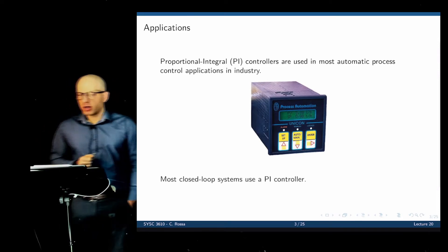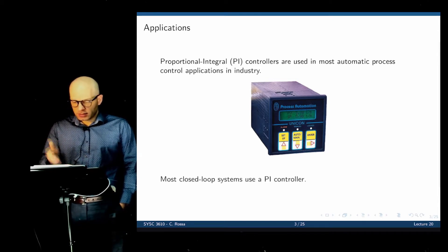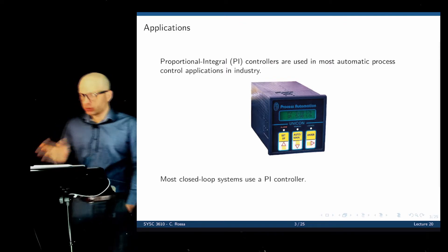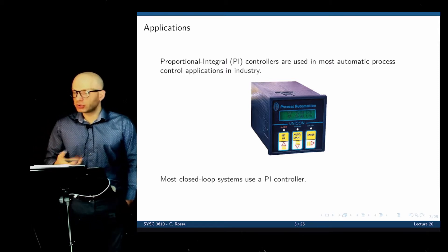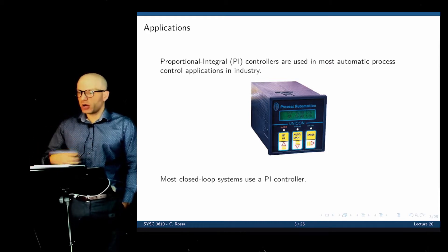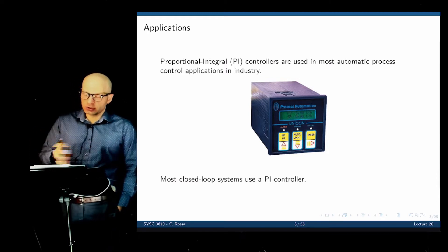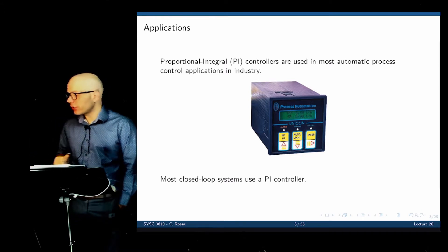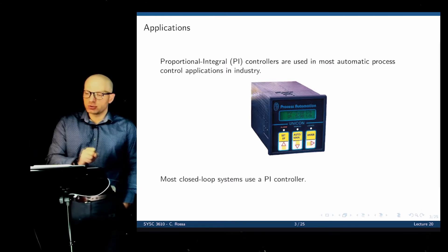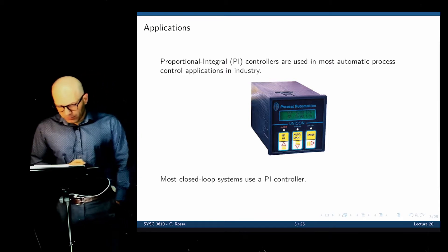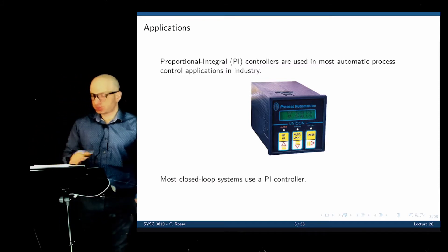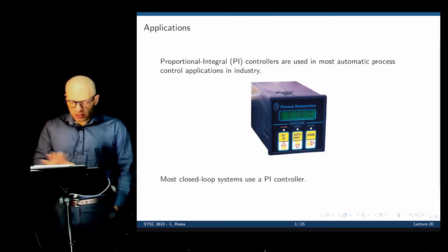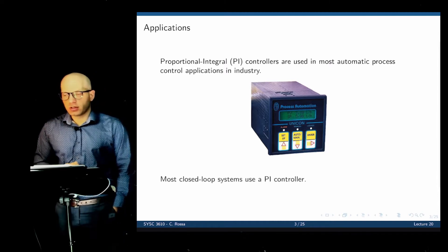Here is a PID controller you can buy from Amazon for around $80. It has settings where you can select the controller gains—proportional, integral, and derivative. All you supply to it is a voltage related to the error in the system. You measure two quantities, subtract them to create an error, send the error to this machine, specify how much the output should be proportional to the error, its integral, or its derivative, and this unit computes and outputs a voltage sent to the plant.